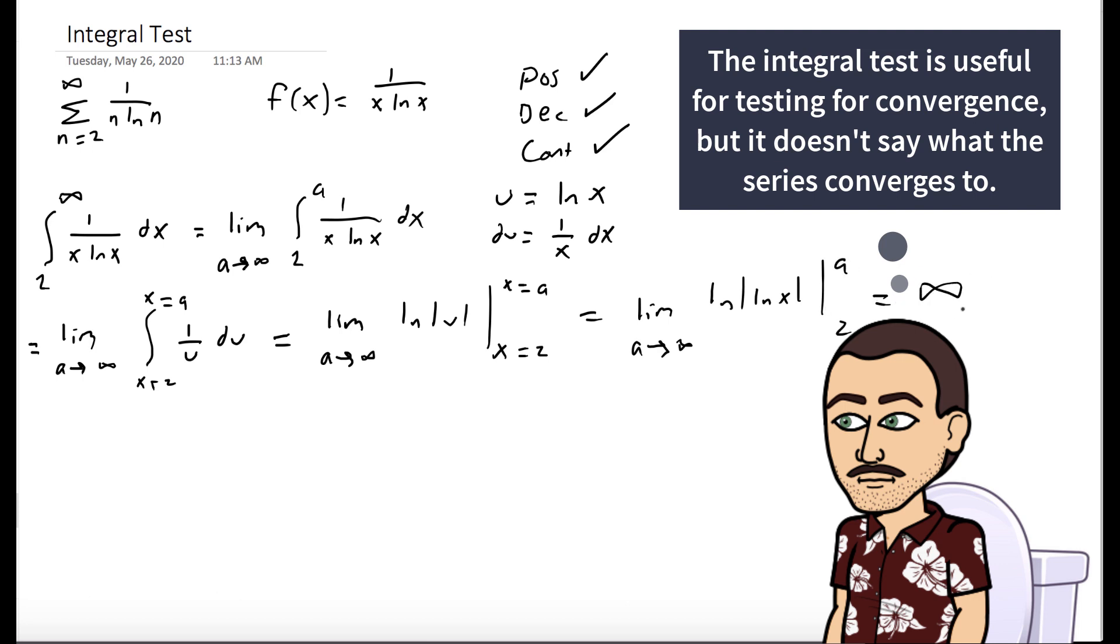And when we evaluate at a, we get the natural log of infinity, which is infinity, which means our integral diverges. And by the integral test, our series also diverges.